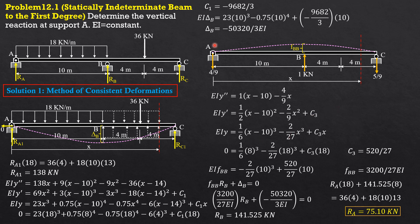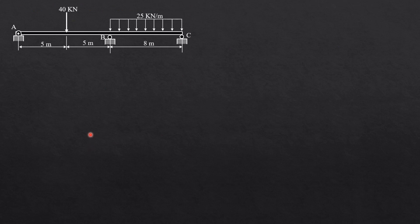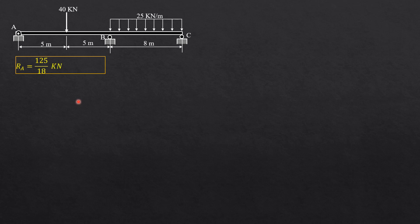I want you to apply the same approach and verify the result on the next slide. For your exercise, to verify if you have understood the preceding examples — solve for the reaction at A. The answer is exactly 125/18 kilonewtons, or approximately 6.944 kilonewtons.